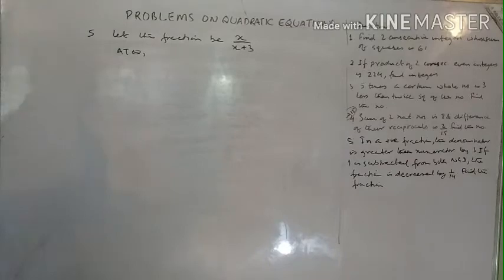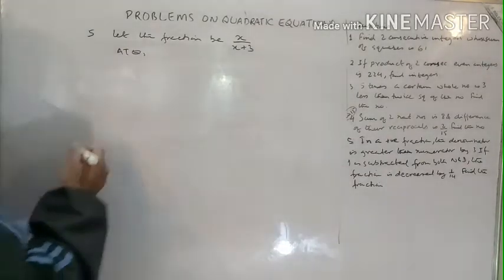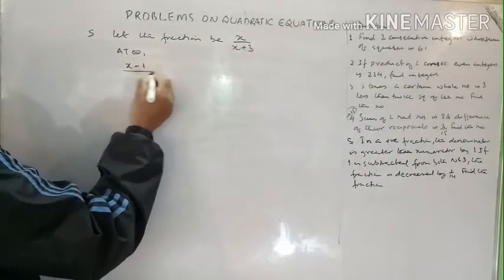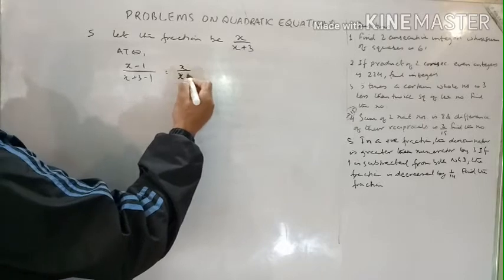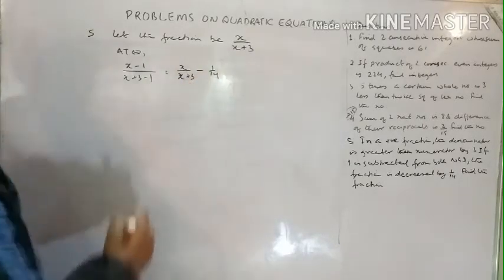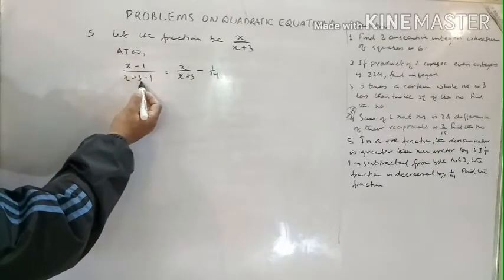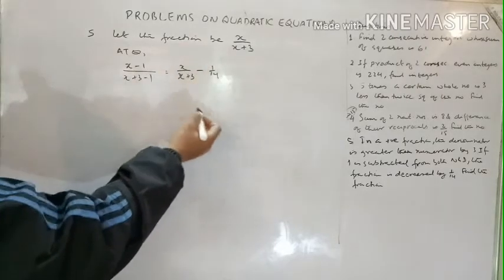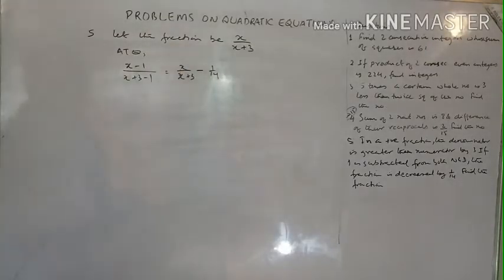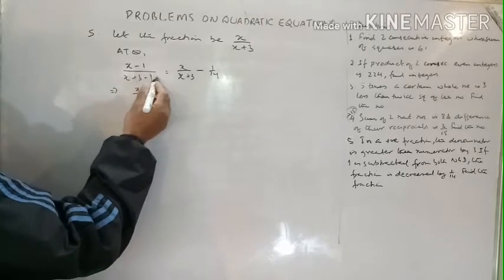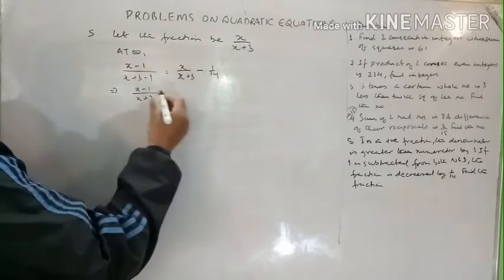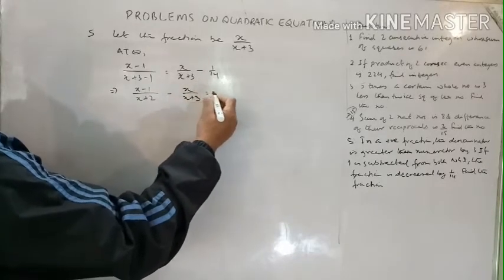According to the question, if 1 is subtracted from both numerator and denominator, the new fraction is (x minus 1) over (x plus 3 minus 1), which is (x minus 1) over (x plus 2). This new fraction is decreased by 1/14 from the original, so: (x minus 1)/(x plus 2) minus x/(x plus 3) equals minus 1/14.